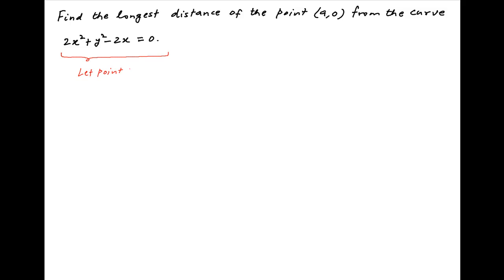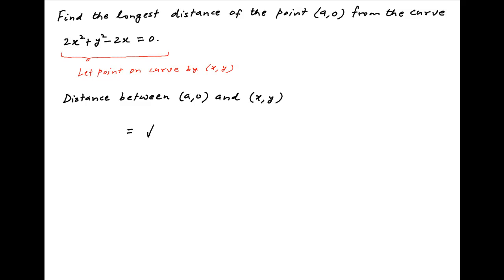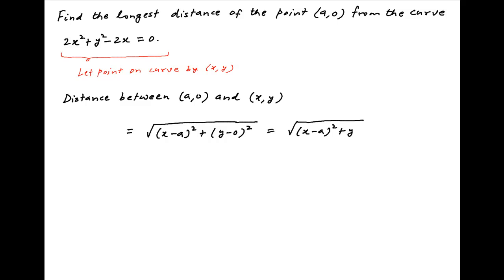Let any point on the given curve be (x, y). The distance between the point (a, 0) and (x, y) on the curve is equal to the square root of (x minus a) squared plus y squared. Let's denote this distance by s. Therefore, s squared is equal to (x minus a) squared plus y squared.